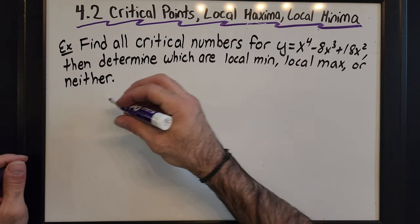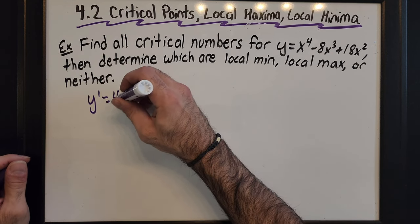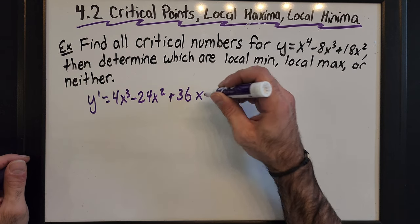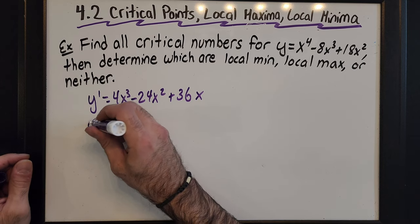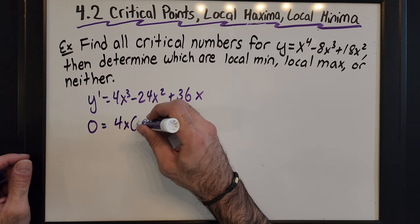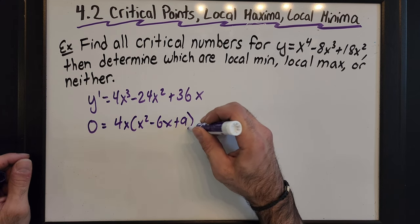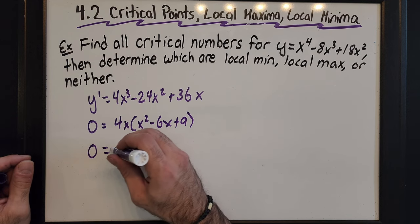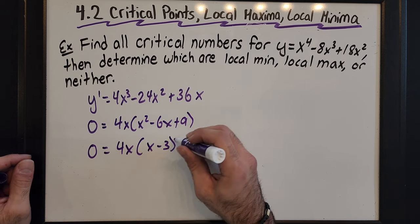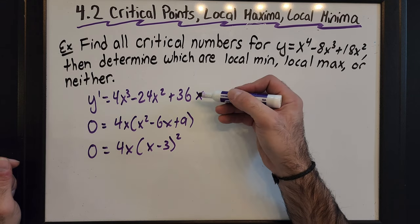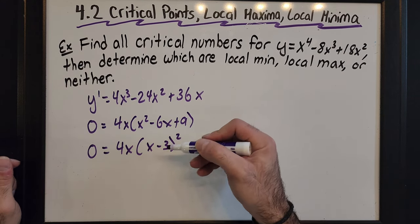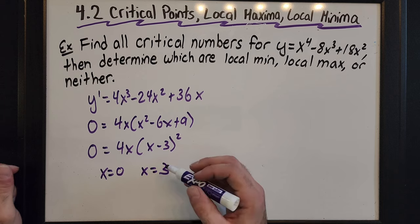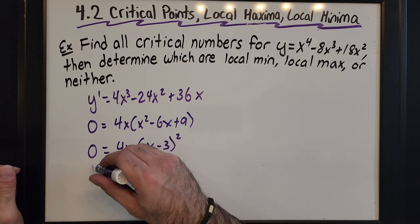To find critical numbers, I have to find the first derivative, set it equal to zero, and factor. So y prime is 4x³ minus 24x² plus 36x. I set it equal to zero and factor out the 4x they have in common. I notice a perfect square trinomial, so I keep factoring until fully factored. This gives me x equals zero and x equals three — these are my critical numbers.